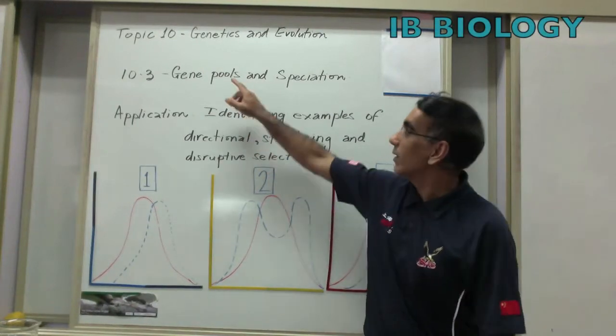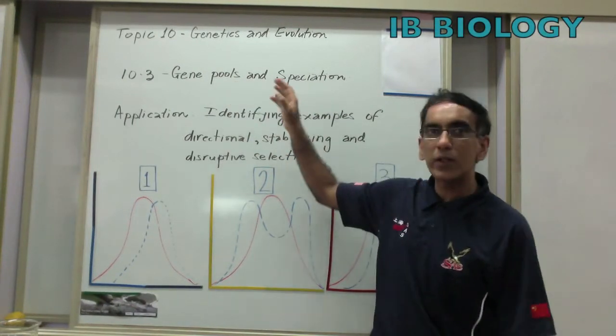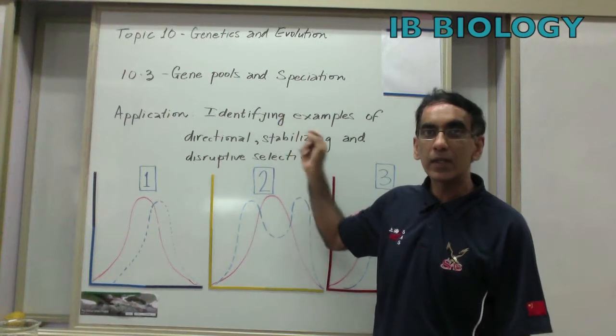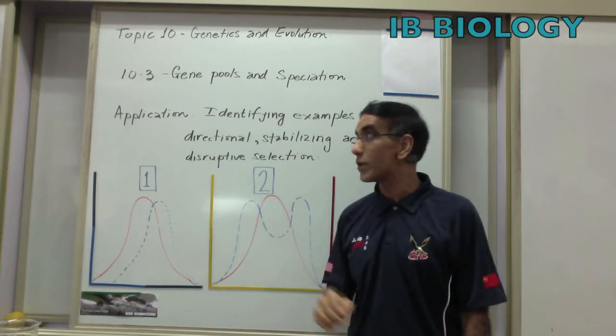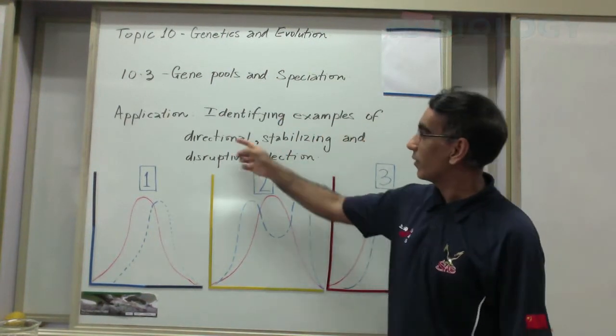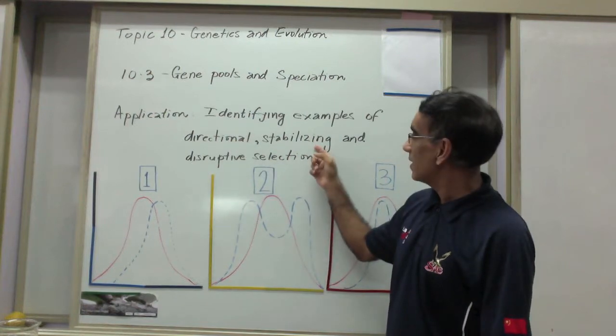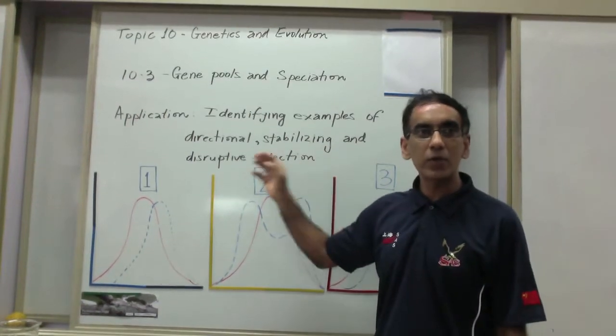Last time we were dealing with gene pools and speciation and we left with this homework assignment for each person to research one example of directional selection, stabilizing selection, and one example of disruptive selection.